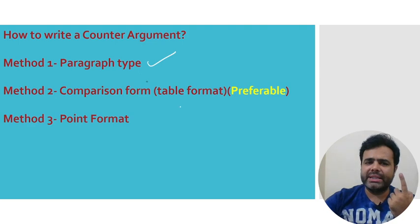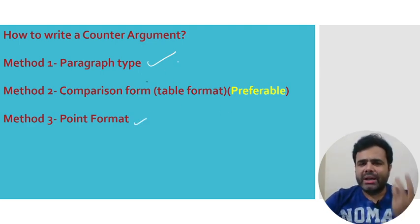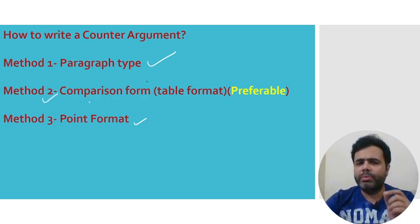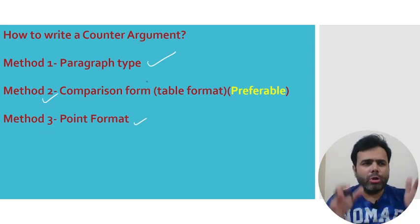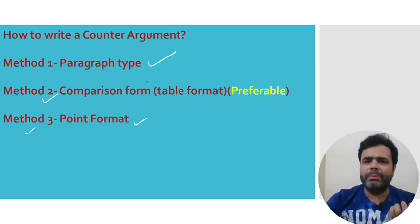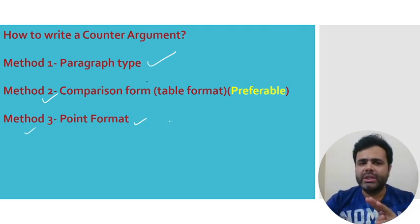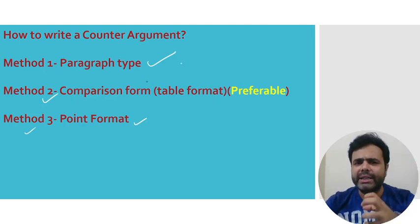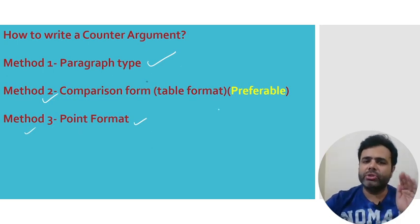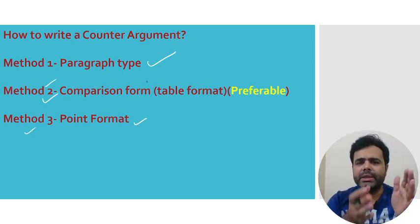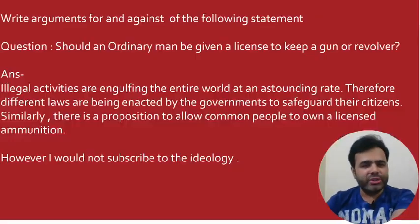Counter argument लिखने के तीन तरीके हैं: एक paragraph form, एक tabular यानी table form, और एक point form। Paragraph form थोड़ा obsolete हो गया है — कम prefer किया जाता है। जो method मैं अपनाने जा रहा हूँ वो preferable है — comparison/column form में लिखना यानी table form। Point form में भी लिखा जा सकता है। पहले बच्चे paragraph form में लिखते थे लेकिन उसमें words exceed हो जाते थे और clarity नहीं मिलती थी।